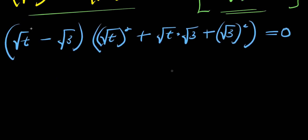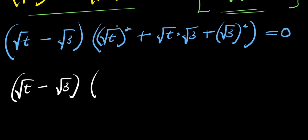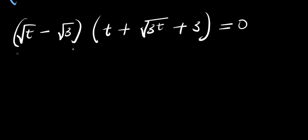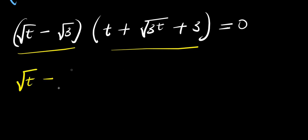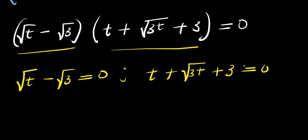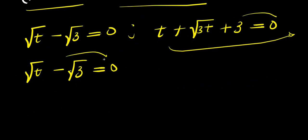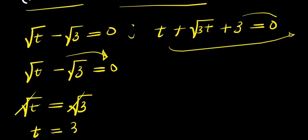So from here, we have root t minus root 3, times t plus square root of 3t plus 3, equals 0. We equate each factor to 0. From root t minus root 3 equals 0, we get root t equals root 3, and squaring both sides gives t equals 3. This is our first solution, t₁ = 3.